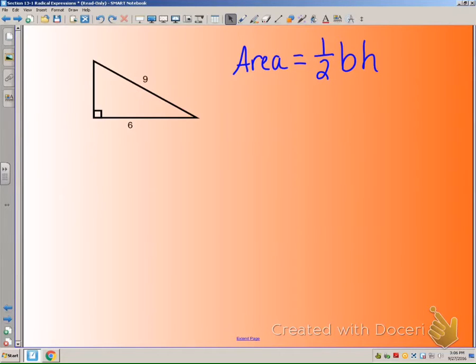So, we know that in order to find the area, we've got to know the base and the height. Well, we know our base is six, but we don't know our height, but then comes in the Pythagorean Theorem. I can use Pythagorean Theorem. This could be my a, so I've got a squared plus six squared equals nine squared.